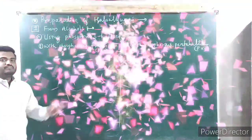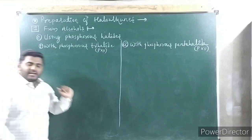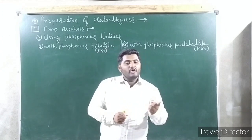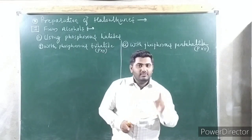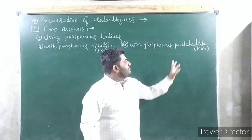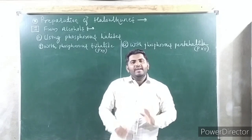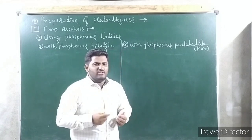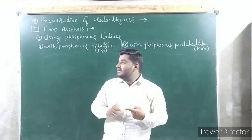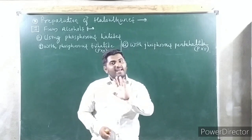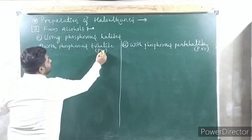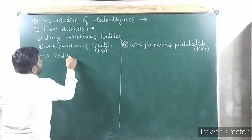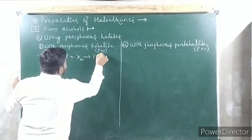Now the third method: from alcohols using phosphorus halide. There are two cases: phosphorus trihalide (PX₃) and phosphorus pentahalide (PX₅). Trihalide means three halogen atoms, pentahalide means five halogen atoms. In both cases you get haloalkanes. Remember: PX₃ is prepared from red phosphorus + X₂ (halogen). Sometimes instead of PX₃, they give red phosphorus and X₂ — both are the same.